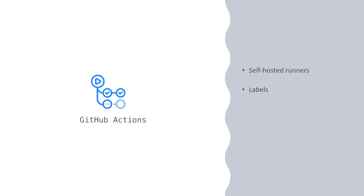So you've installed some self-hosted runners to use with your workflows. How do you actually make your workflow execute on those runners? That is where the magic of labels comes into play. Let's look at how you can use labels to target which self-hosted runners will execute your workflows.